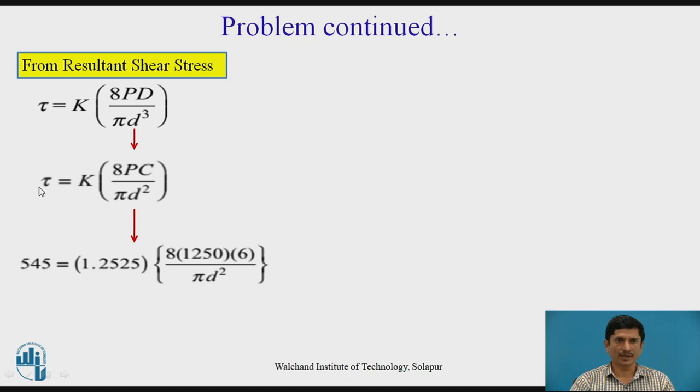In this equation, if I put the value tau = 545, Wahl's factor = 1.252, maximum force = 1250 Newton, and spring index = 6, solving this equation, I can get small d, which is the diameter of the spring wire, 6.63. We can round it up to 7 millimeter. If you have the SWG standard wire gauge, you can calculate this diameter on the basis of SWG. Right now, for this instance, let us follow the diameter D = 6.63, approximately equal to 7 millimeter.